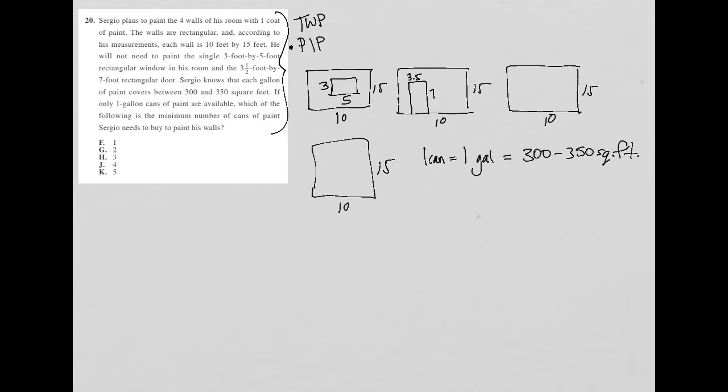If only one gallon cans of paint are available, which of the following is the minimum number of cans of paint Sergio needs to buy to paint his walls? Well, we've been given that a gallon of paint or a can of paint equals 300 to 350 square feet. So that means that we need to figure out what's the square footage of each of these walls, right? What is basically, what is the area of each wall? So when I see square feet, when you see square feet on this test, I want you to think area, because that's how we get the unit square feet, or square anything, square inches, square centimeters, we're going to be finding the area.